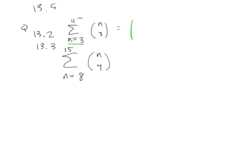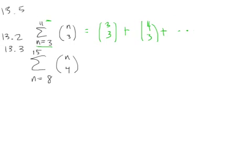Okay. Okay, so 3 choose 3, then I write a plus, because this is a sum, and then I do 4 choose 3, and then I write a plus, and so on, all the way to, at the very end, I stop at 11 choose 3. Mm-hmm. Okay, so that's what this symbol means. Does that make sense?